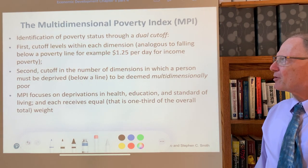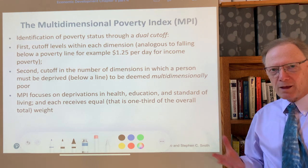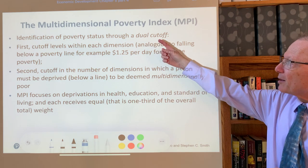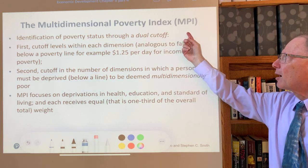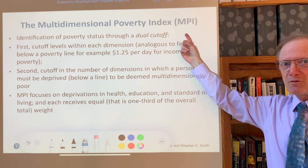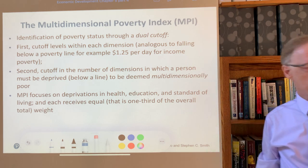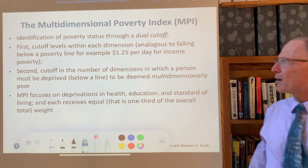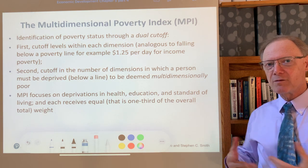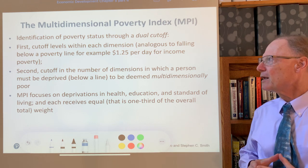Hello everyone. In this episode we're going to take a close look at the most widely used, well-founded measure for multidimensional poverty. This is known as the Multidimensional Poverty Index, or MPI, which is calculated each year for as many countries as data can be found — well over a hundred — by the United Nations Development Program. It presents these measures and outcomes in the Human Development Report, the same report in which it presents every year the new data on the Human Development Index.